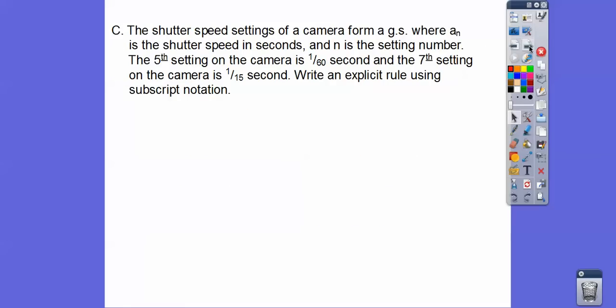Here's the first example. The shutter speed setting of a camera formed a geometric sequence where a sub n is the shutter speed in seconds, and n is the setting number. So basically here, whatever that means right there, here's our information that we really need right here. So the fifth setting of the camera is 1/60th second, and the seventh setting of the camera is 1/15th of a second. So we're going to write an explicit rule, the a sub n rule, using the subscript notation.